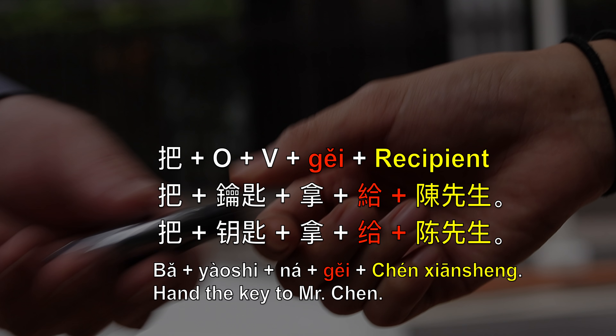把钥匙拿给陈先生 — she requests that I hand over the key from my hand to another person, or recipient. In this case, it's Mr. Chen.